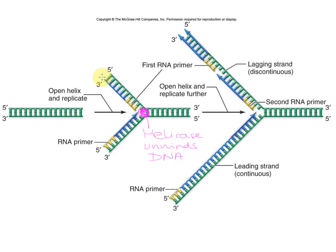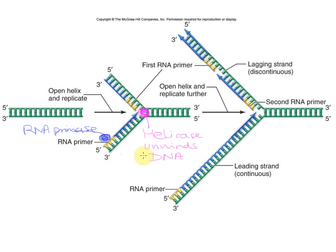Once DNA is unwinding, RNA primase adds an RNA primer. There are two strands: the leading strand and the lagging strand. On the leading strand, RNA primase comes in and adds just one RNA primer — that's it. Then DNA polymerase III comes in and does the rest of the synthesis on the leading strand.